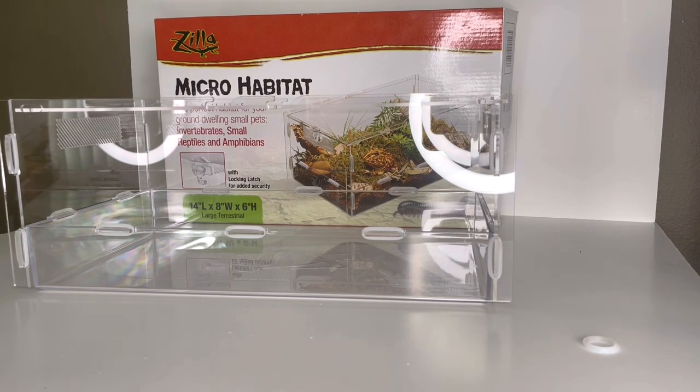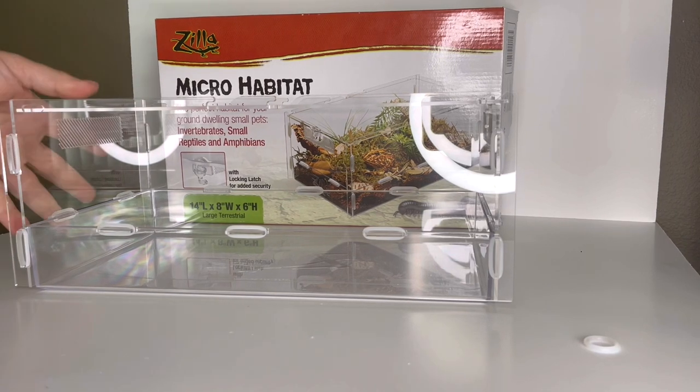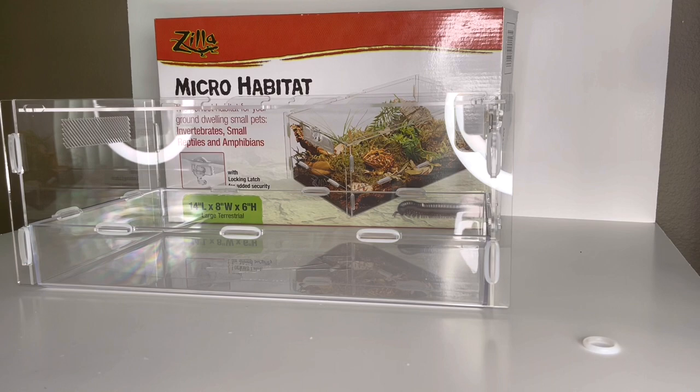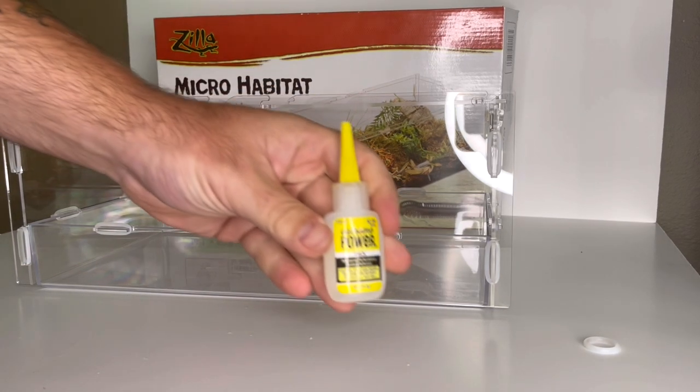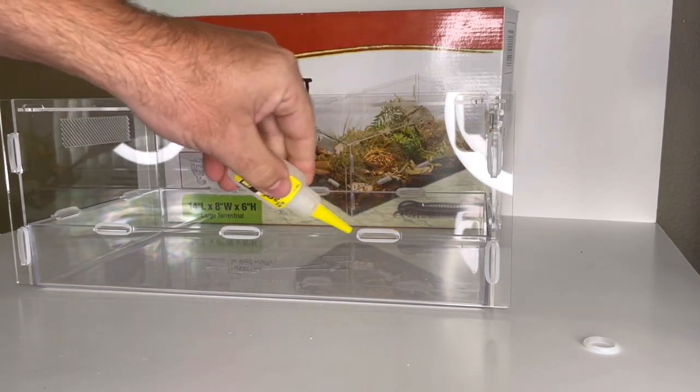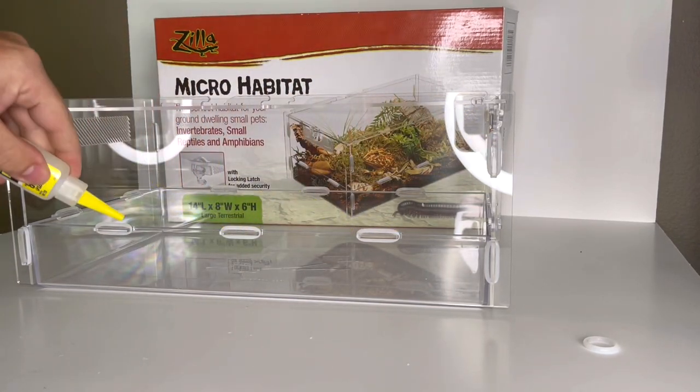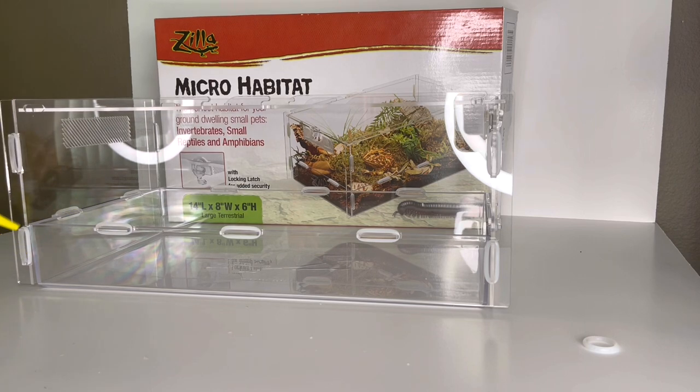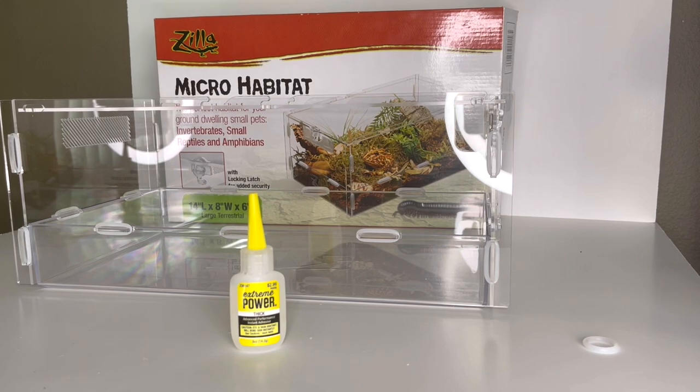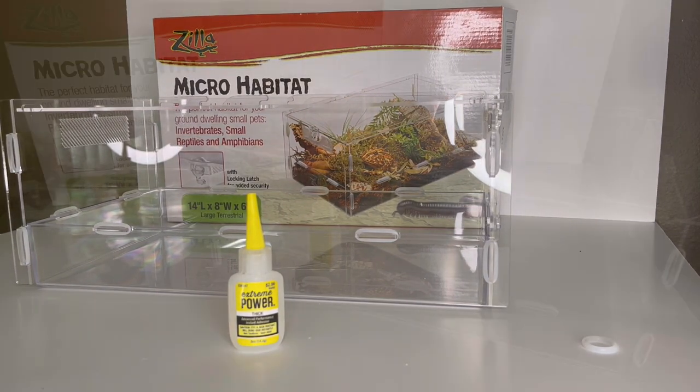So yeah, this is the unit. I'm pretty excited to play around with this one. It obviously has more space than the last one so we can do more with it and we can also have a little bit larger inhabitants. The photo shows a frog but I think we can do a few other things in there. If you don't trust the rubber bands, just get some type of super glue and dab it on there.